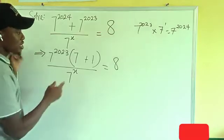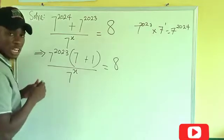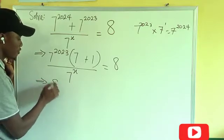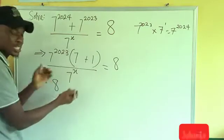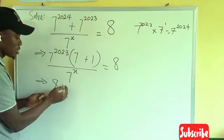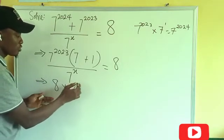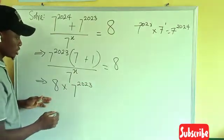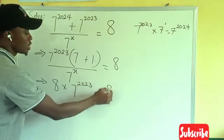Now from here, you can see that when we add these two together, that is 7 and 1 together, we are going to be having 8. We have 8. And don't forget that the bracket is the same thing as multiplication, multiply by 7 to power 2023. Then equals to 8.